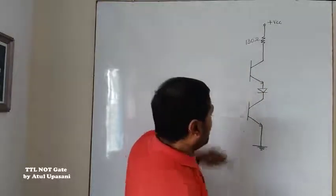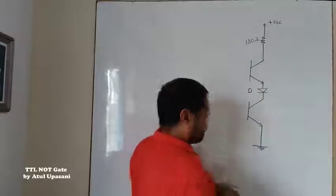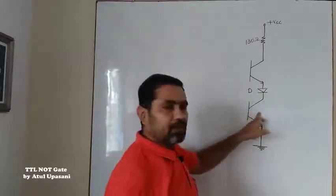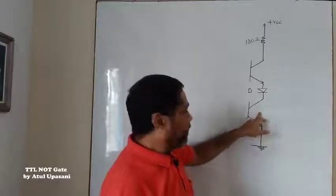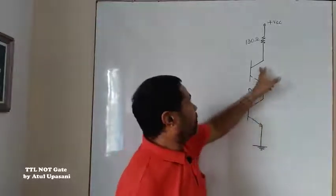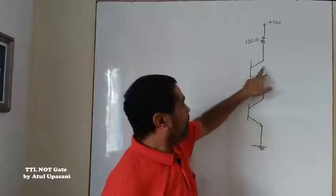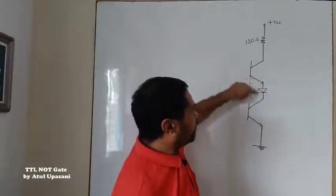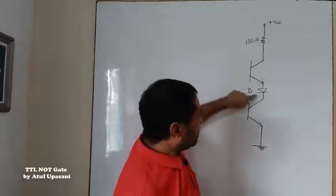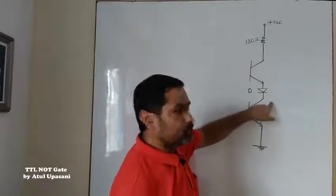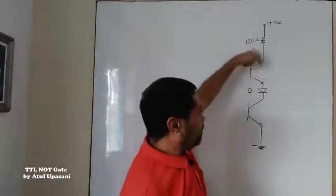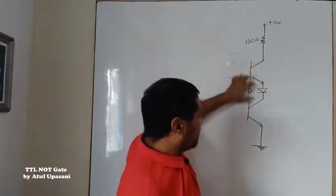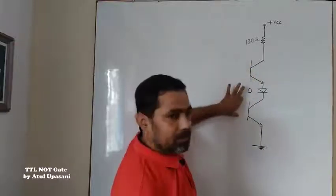In between these two transistors, there is a diode connected. The purpose of this diode is to prevent reverse current from changing the conditions of the transistors. So that is why no reverse current flows — all the current will be unidirectional only. That is why there is a diode connected between these two transistors.